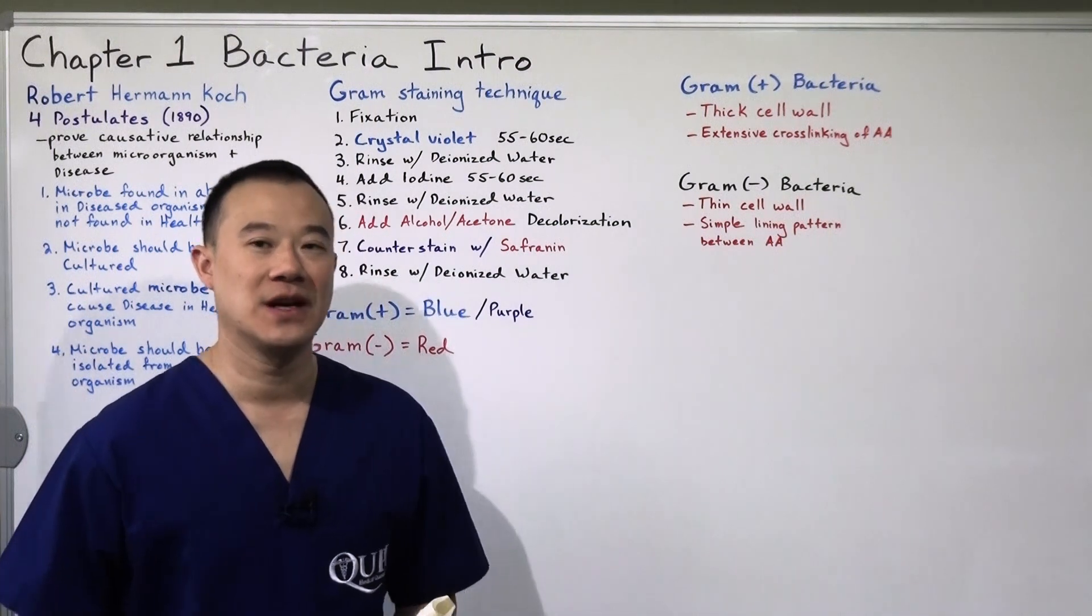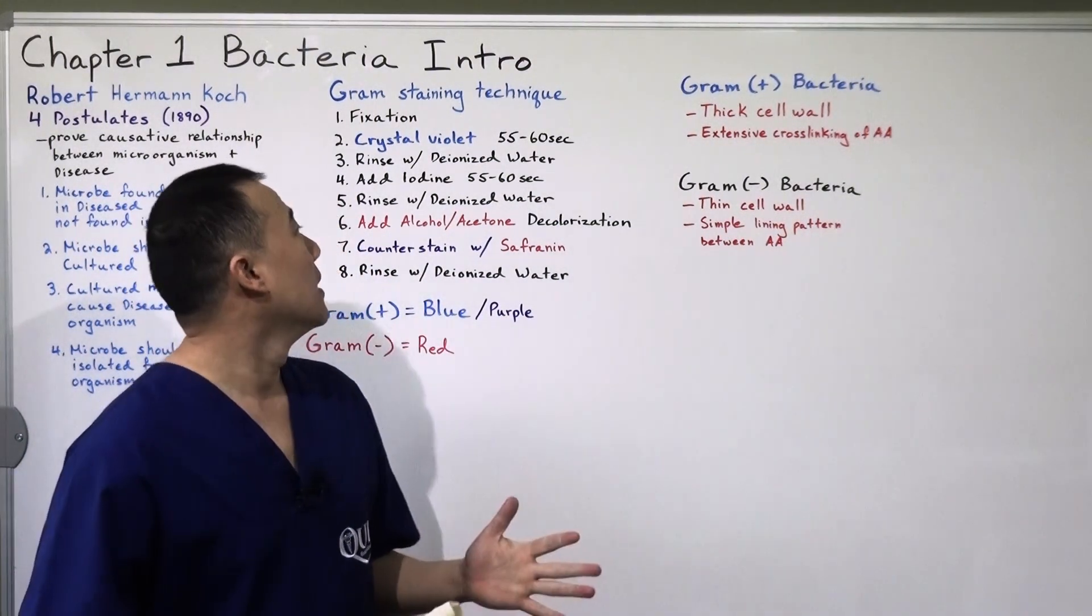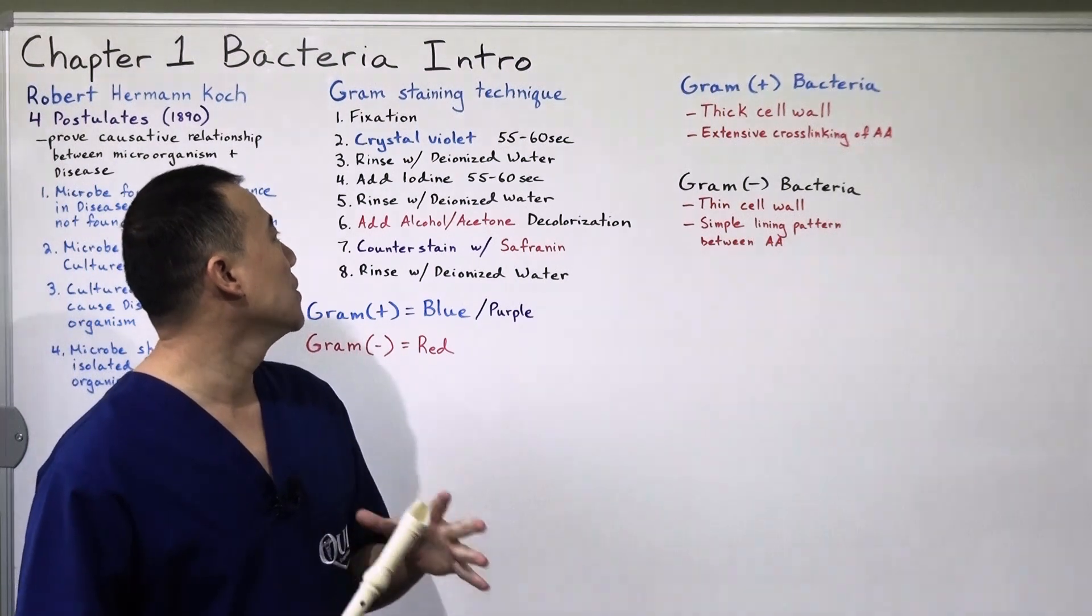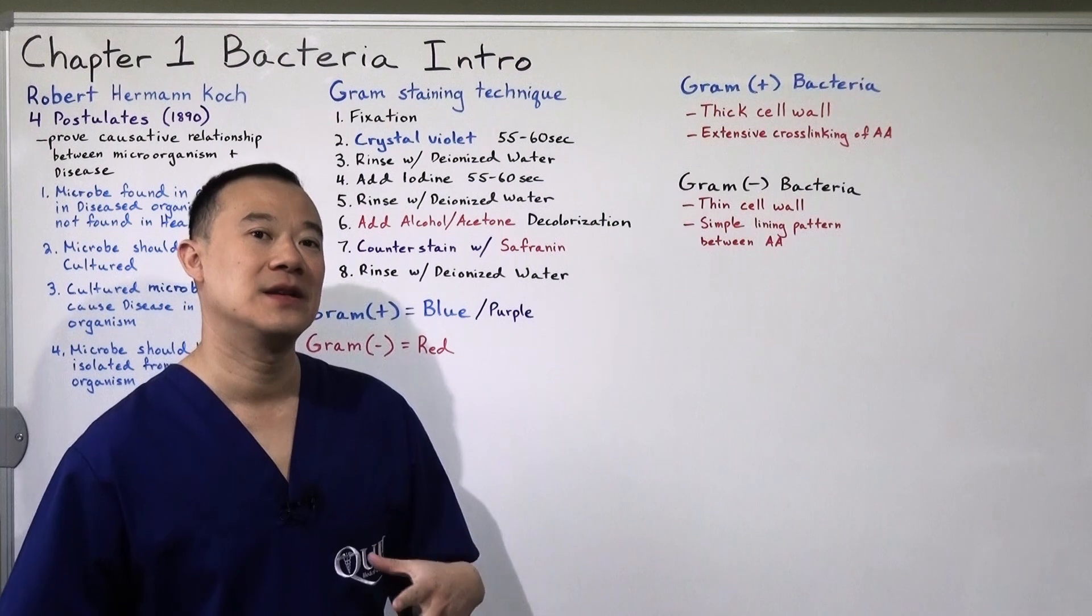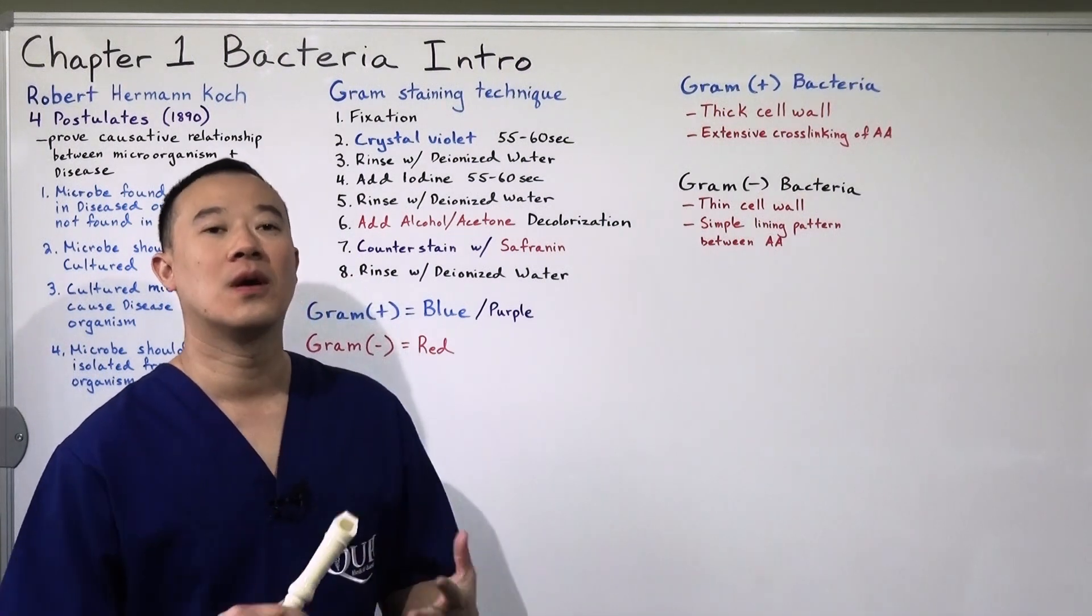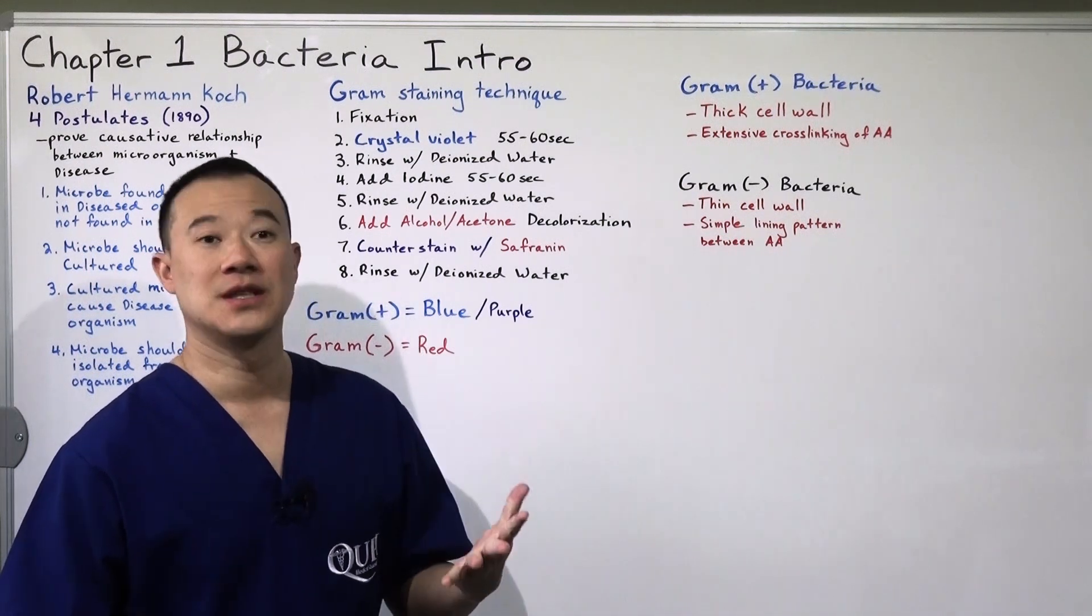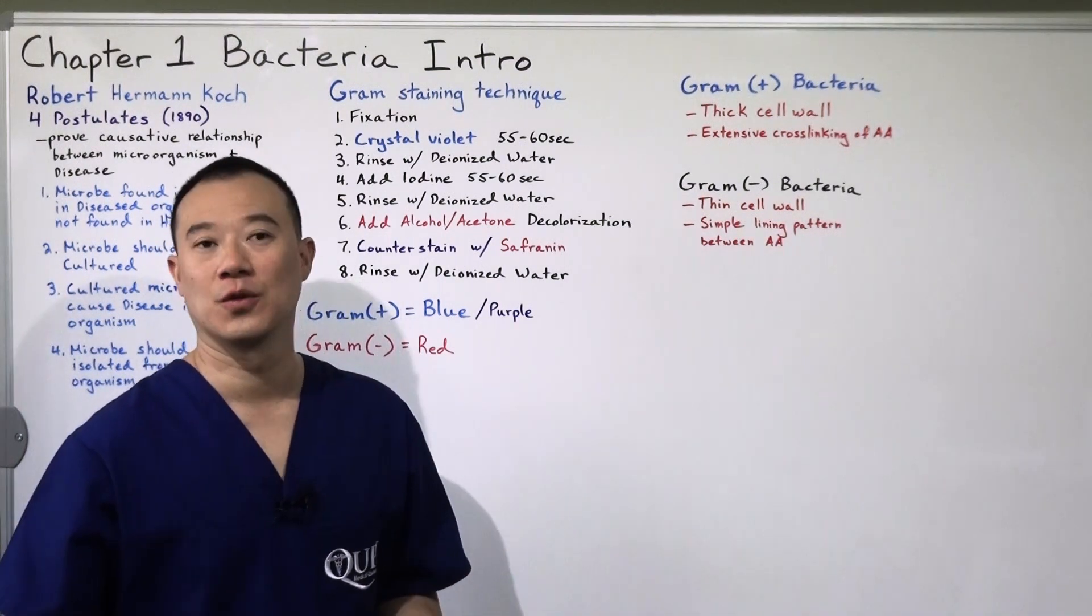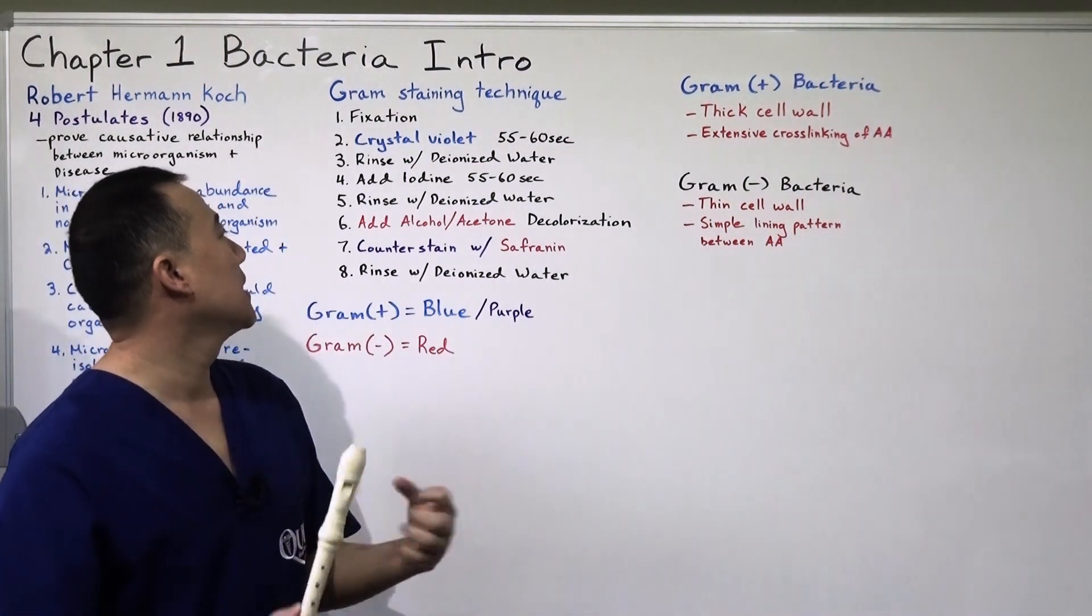Two, crystal violet. Crystal violet is a bluish stain and you would do 55 to 60 seconds and this is how you would give it enough time for the dye to soak into the cell wall or cell membrane of the bacteria. Three, rinse with deionized water.